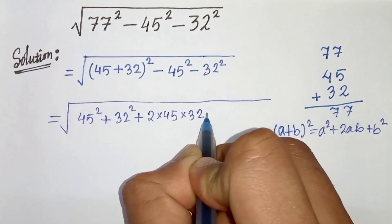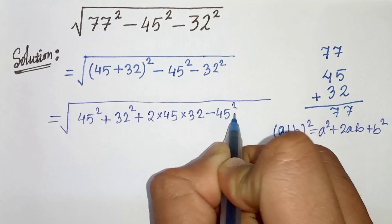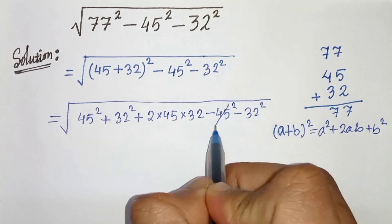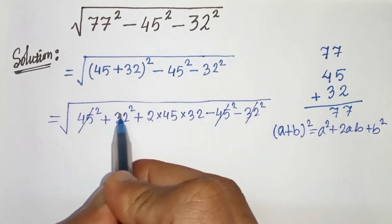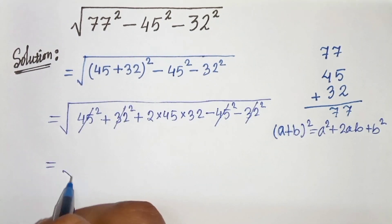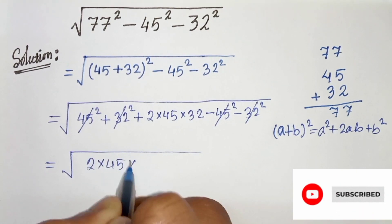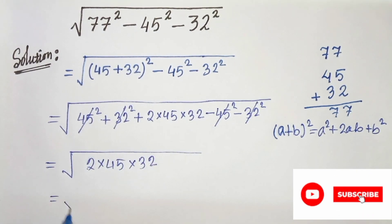And here we have minus 45 square minus 32 square. Plus 45 square gets cancelled and plus 32 square minus 32 square gets cancelled. We are left with root under 2 times 45 times 32.